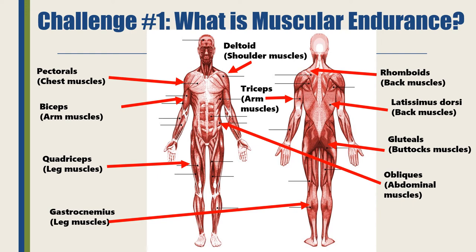Everyone say triceps. Now the shoulder muscles — there are a couple of them, but the main one you're going to be working on is called the deltoid. Please say the word deltoid. There are the abdominal muscles, which are the stomach muscles. One of them is called the obliques — they're on the side of your stomach muscles.